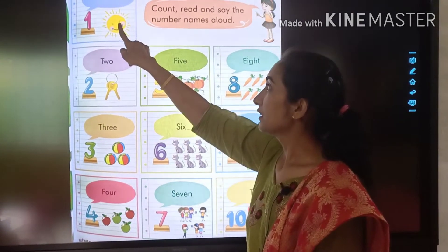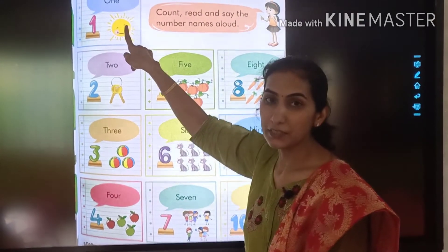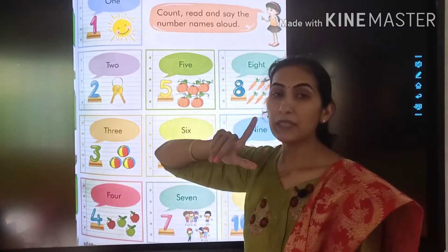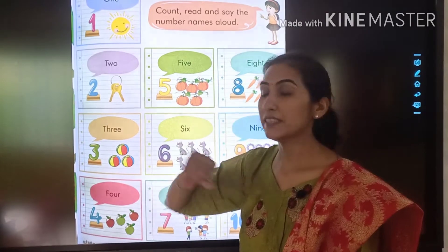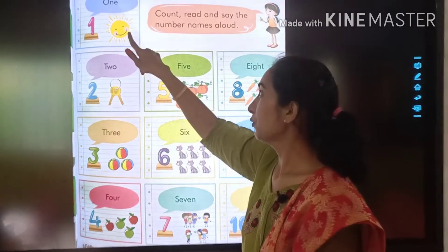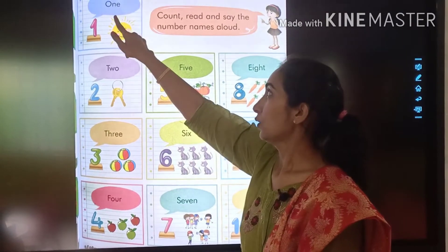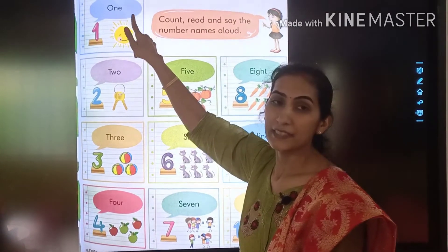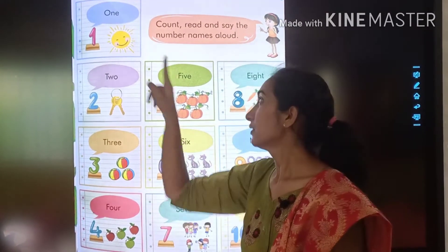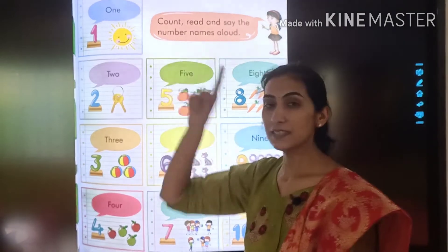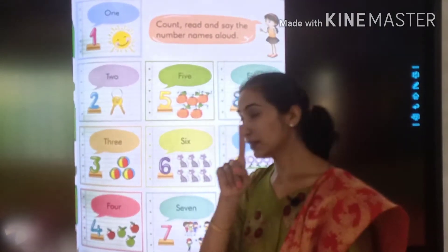This is 1. How many suns can you see here? 1. O-N-E, 1. This is 1.